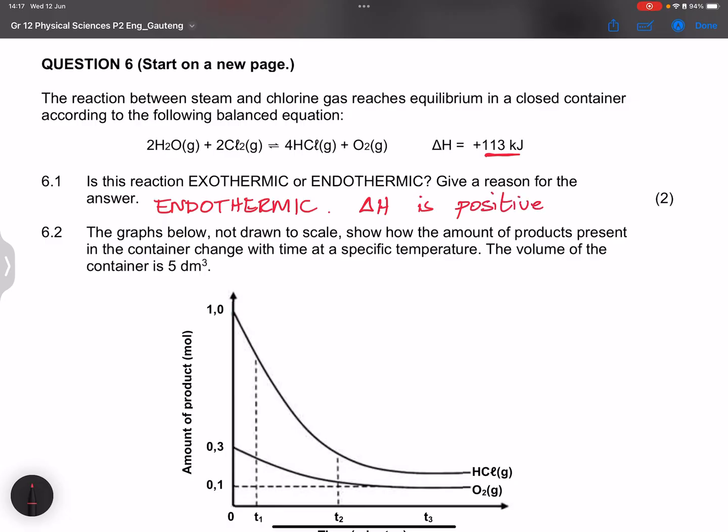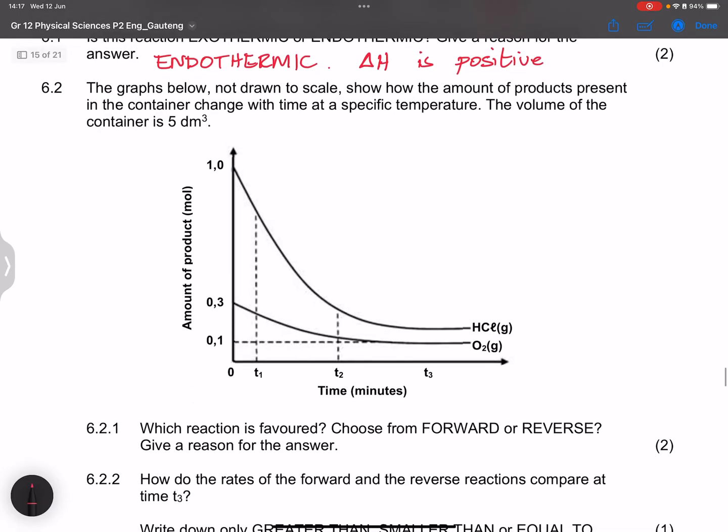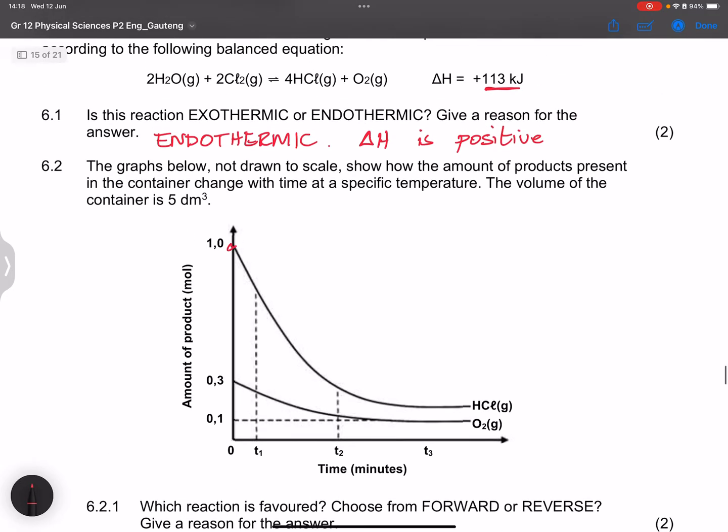Now the next question they say the graph below not drawn to scale shows how the amount of products present in the container change with time at a specific temperature. The volume of the container is five cubic decimeters. Now notice in this case we've got hydrochloric acid that seems to be decreasing at a rapid pace. And the amount of oxygen is decreasing. So if it is decreasing, hydrochloric acid is on the product side, then it's suggesting to us that we must then be favoring the reverse reaction.